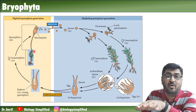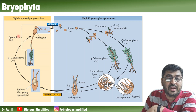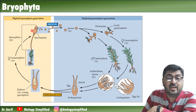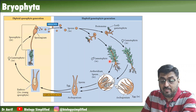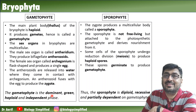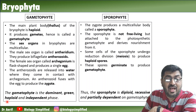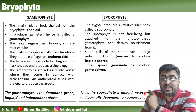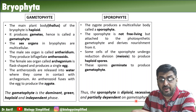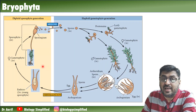The sporophyte cannot do photosynthesis, meaning it is completely dependent on the gametophyte. The gametophyte is an independent structure, while the sporophyte is dependent. That is why the gametophyte has been called the dominant phase - it is green, haploid, and independent. The sporophyte is diploid, recessive, and dependent on the gametophyte.